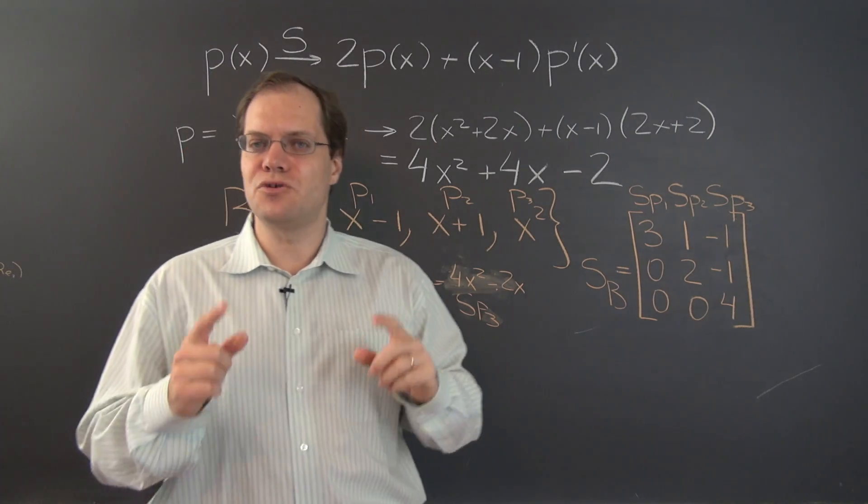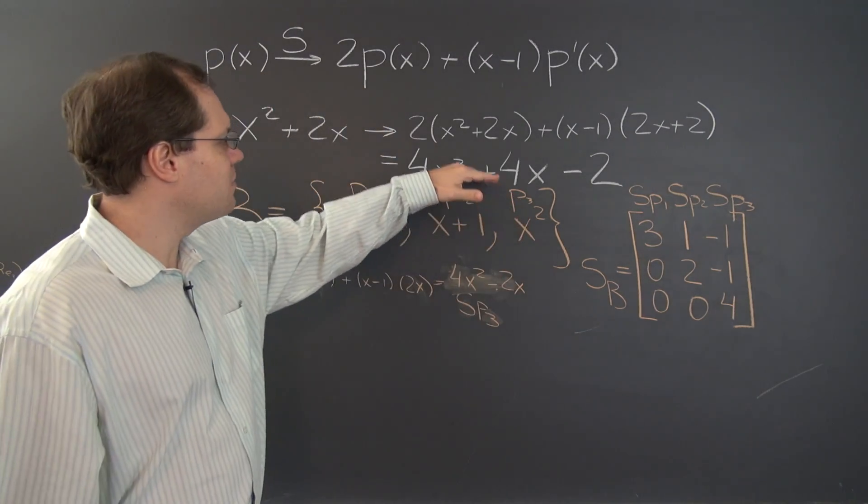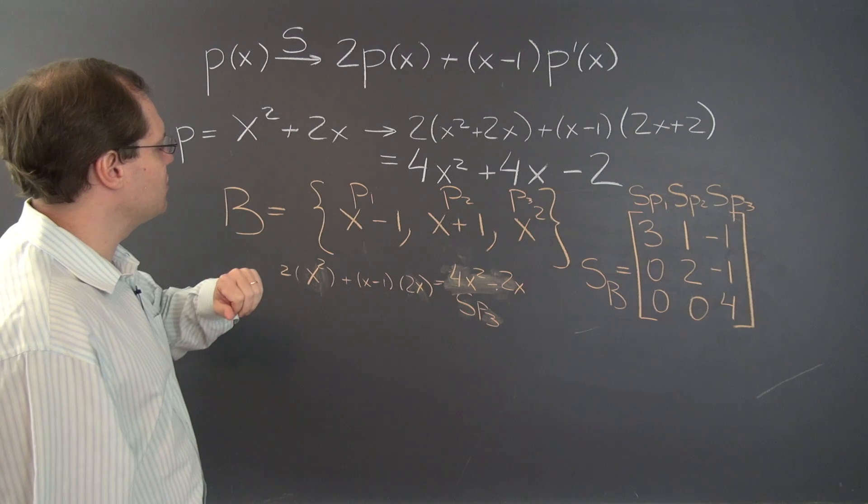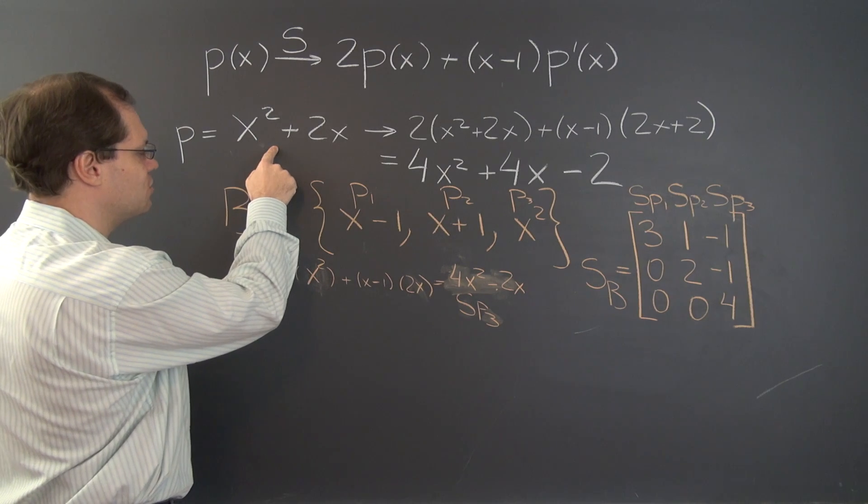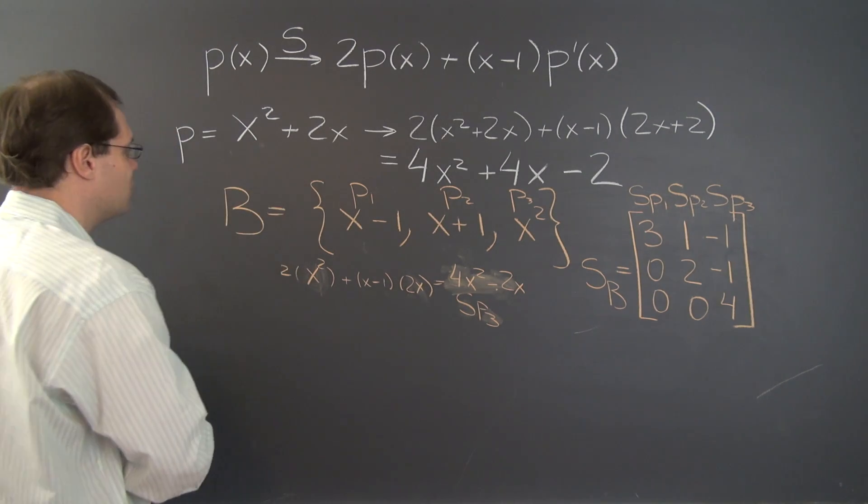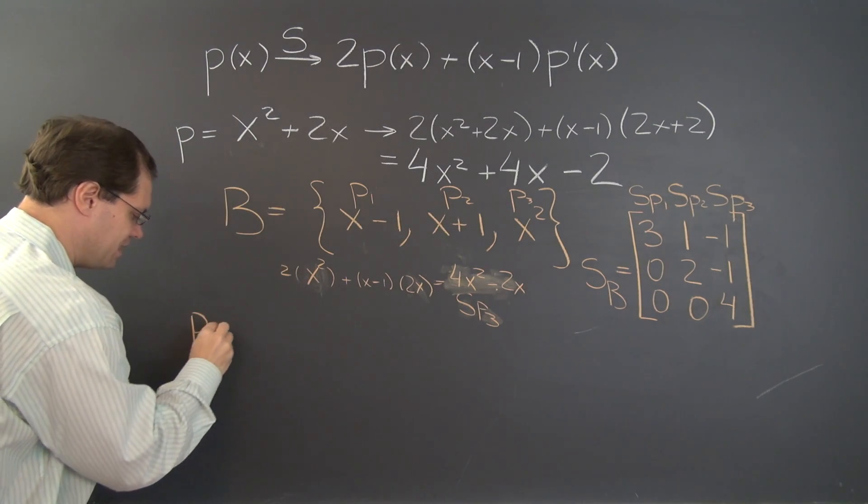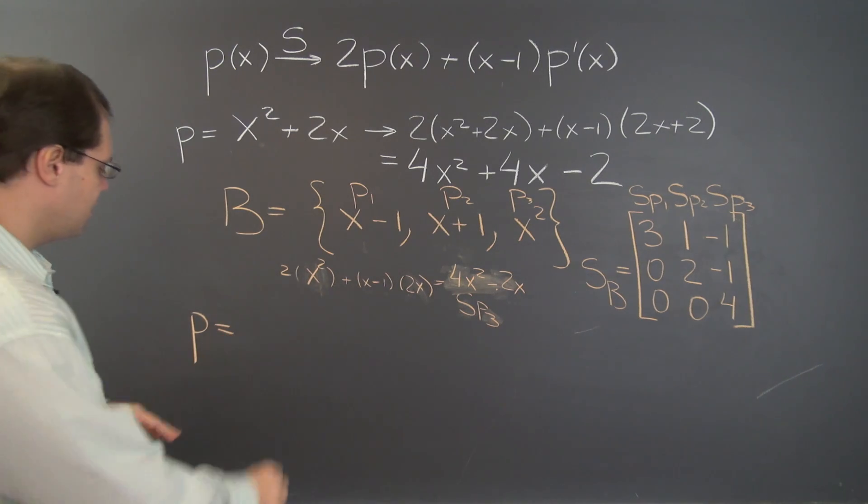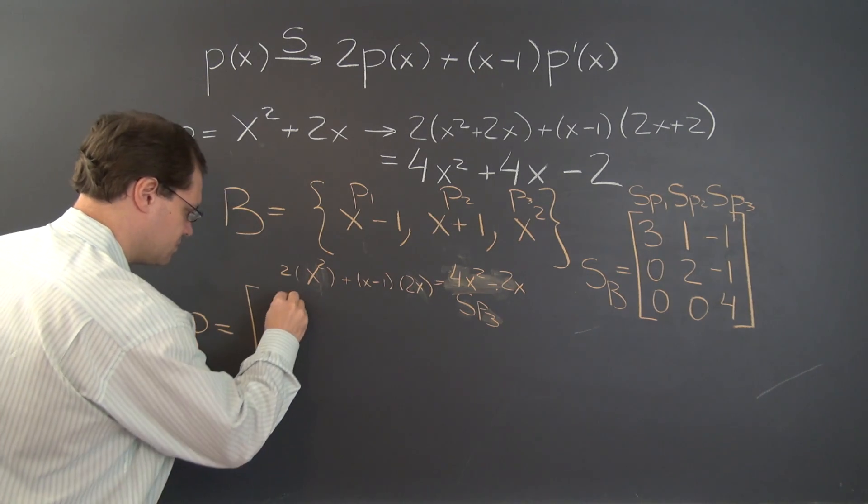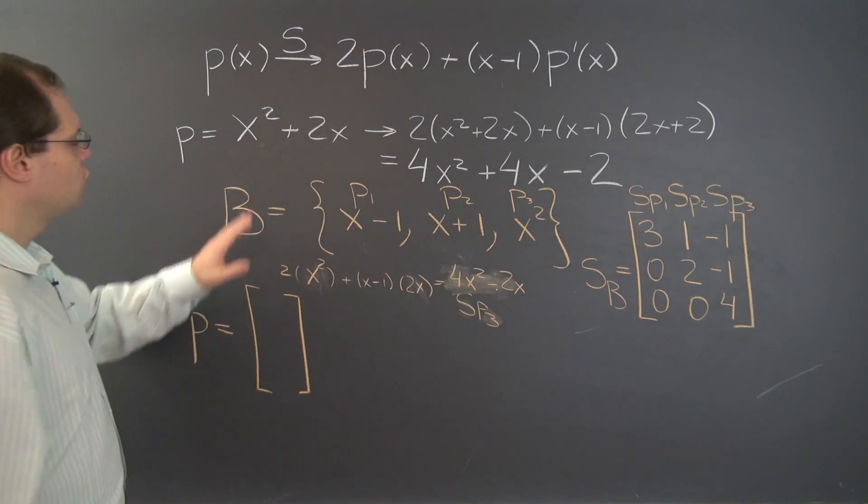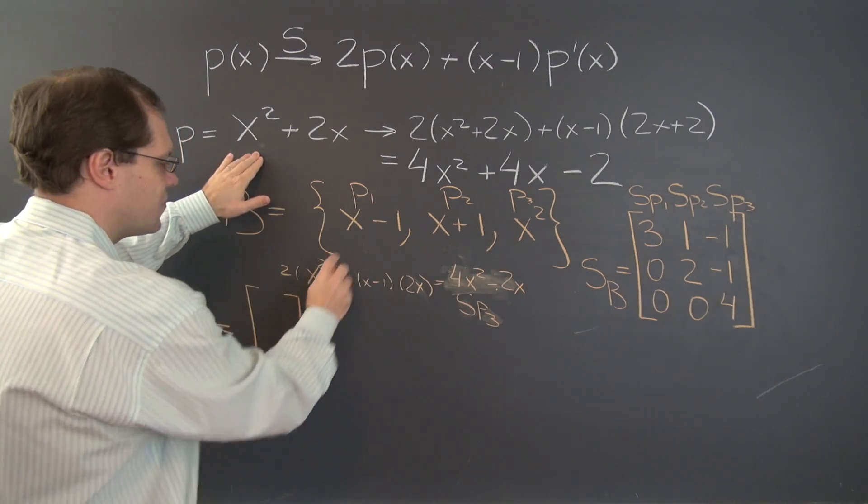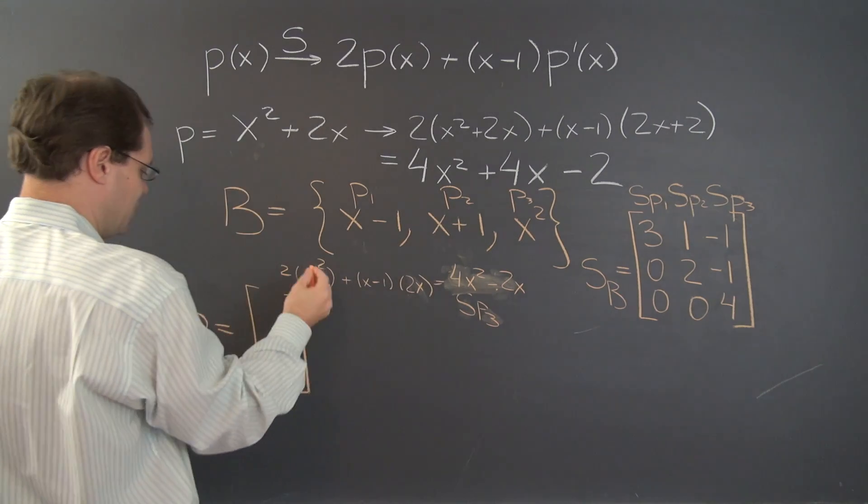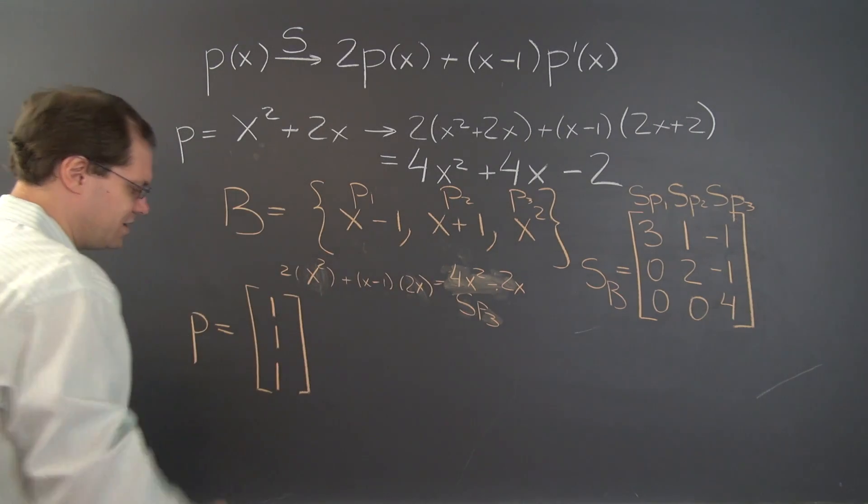Now let's just make sure once that it works by using this polynomial for which we know the answer. And our first task is to decompose this polynomial with respect to the same basis. So of course it's 1 of the last one and the sum of these two. So 1, 1, 1. Very nice.